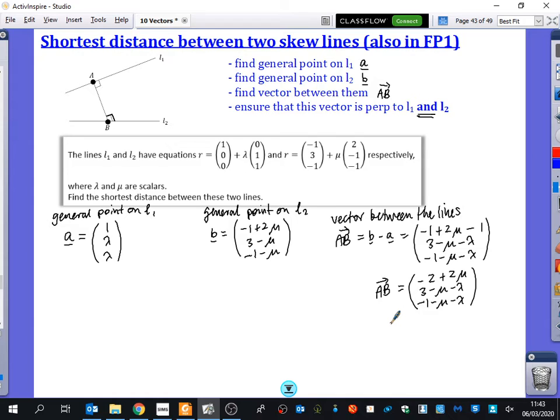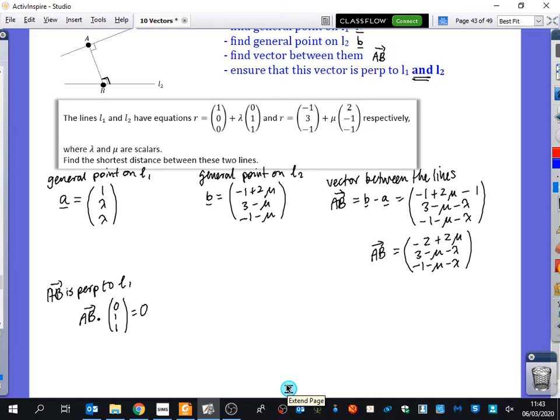I have to scalar dot that with each direction, because if I only dotted it with one of the directions, I'm just saying it's perpendicular to one of them. I need it to be perpendicular to both of them in order for it to be the shortest distance. So now I'm going to say AB is perpendicular to L1. So that means that AB dotted with the direction of L1, which is 0, 1, 1, must be equal to 0. There's a reason I'm not going to do the T equals here, because I can't. There's nothing that they have that's consistent. In this one, I'm going to be dotting it here and coming up with an equation. I'm going to be dotting it here and coming up with an equation. Both of them are going to have a lambda and mu in, so it's going to be simultaneous equations.